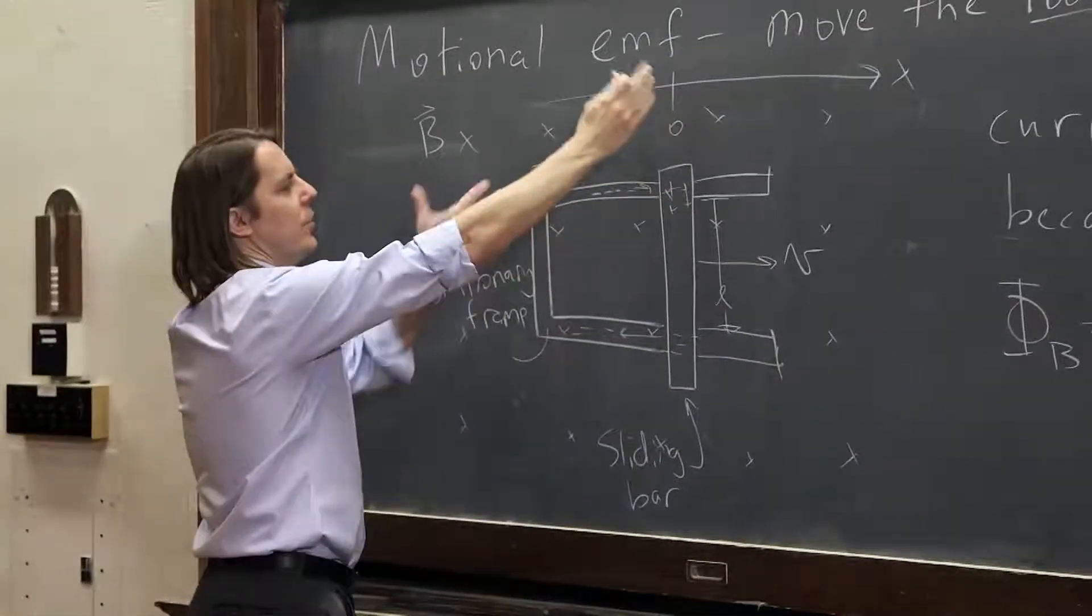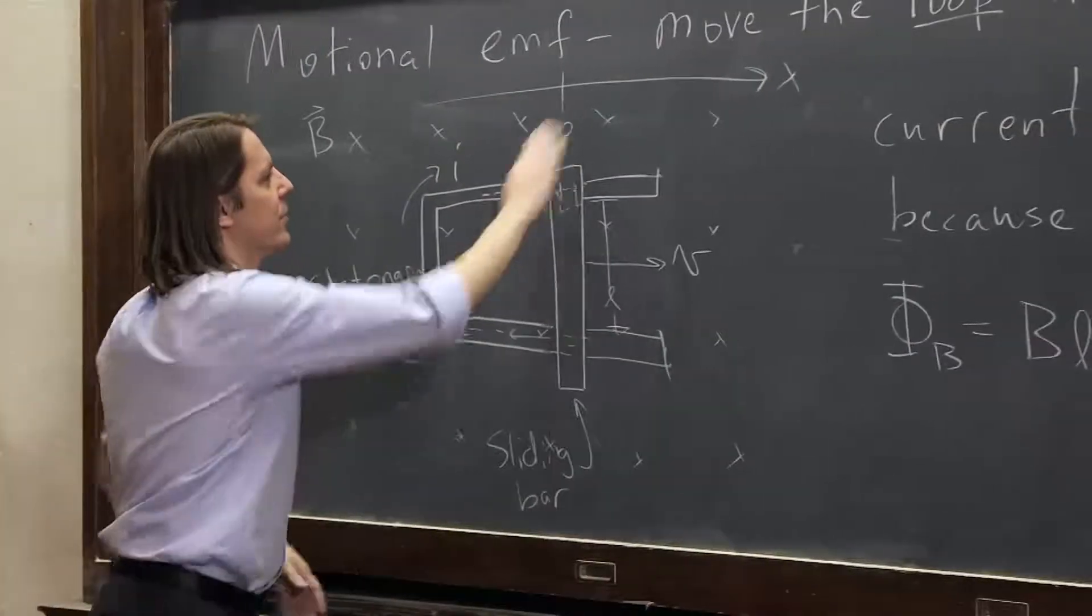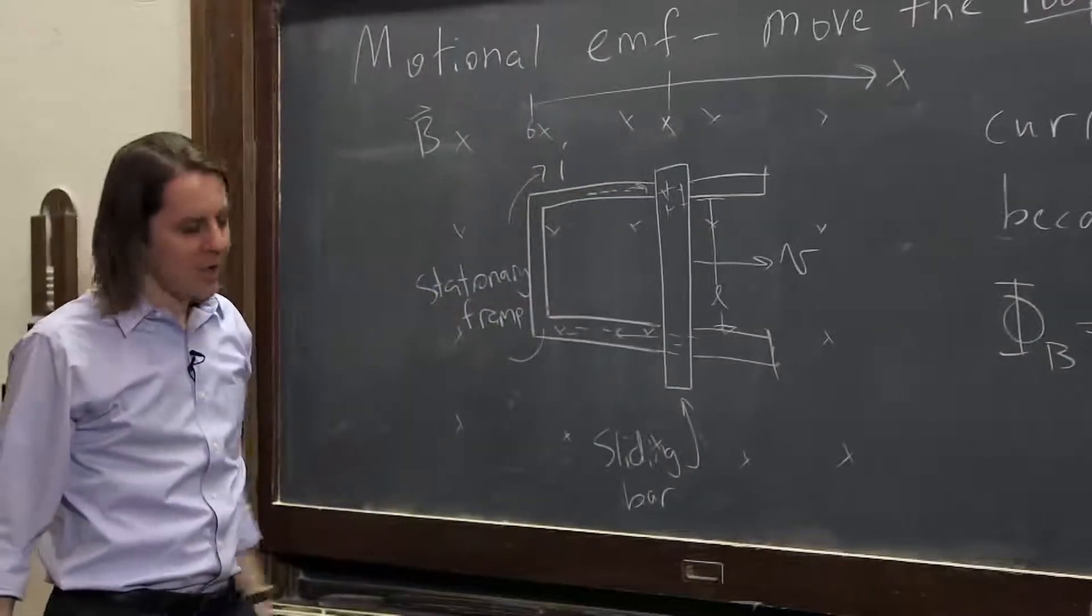All right? So we could put the origin here and say it's already at X. It already has some area. It doesn't matter. So BLX. OK, let's do that. There you go. It's X. In fact, whatever. OK,